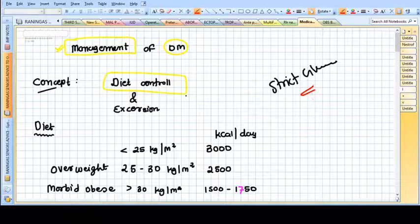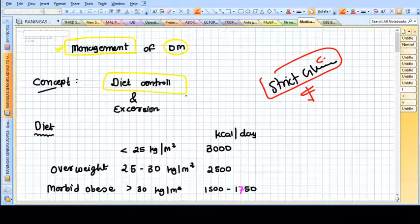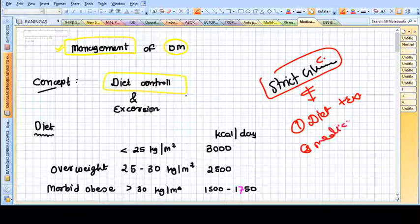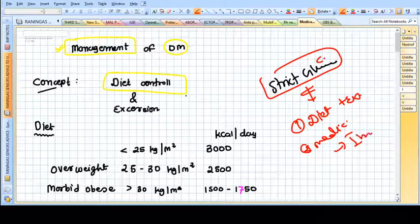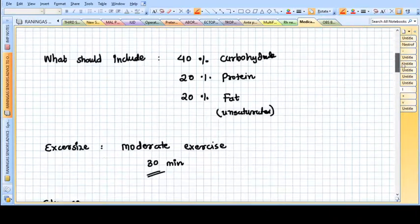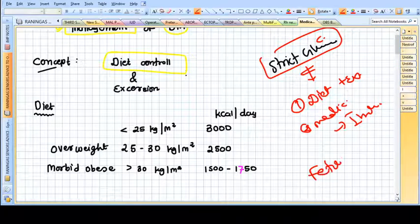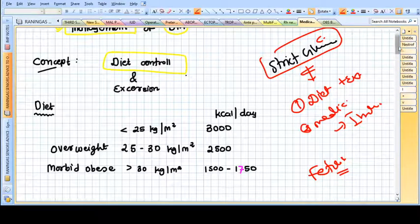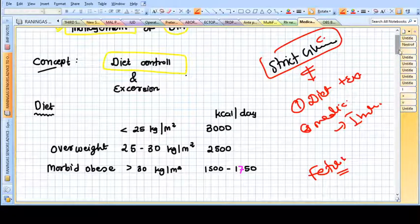When we talk about management in DM, we mean strict glucose control so that minimum problems can be caused toward the fetus and the mother. We achieve that by first diet and exercise, then medications, preferably insulin. We also talk about fetal monitoring because the fetus has high risk of intrauterine death, malformation, or any obstetric complication in case of GDM.